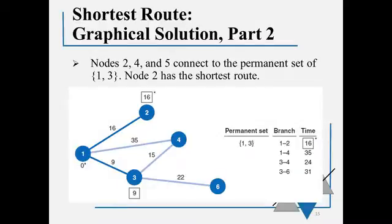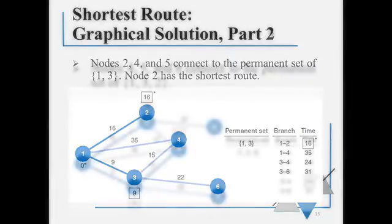So for part 2 in this same problem, now our permanent set is 1 and 3. So we look at all the nodes connected to either 1 and 3, and we're looking for the shortest route again, the lowest number. So we have 16. So now we're going to add 2 to our permanent set.